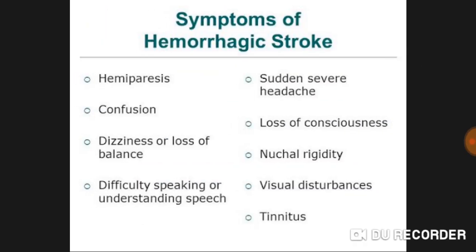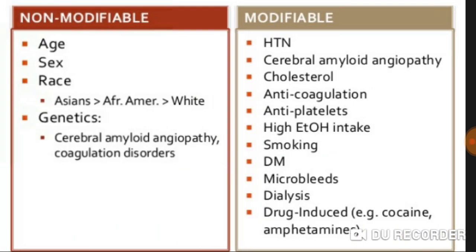Symptoms of hemorrhagic stroke include hemiparesis — in my patient, right hand and right leg have no movement. She had confusion but is now oriented after treatment. Dizziness and loss of balance are present, since right leg and right hand are not working. She has aphasia, but after treatment I see some improvement. No sudden severe headache now. She is fully conscious, understands commands, and has some visual disturbances and tinnitus.